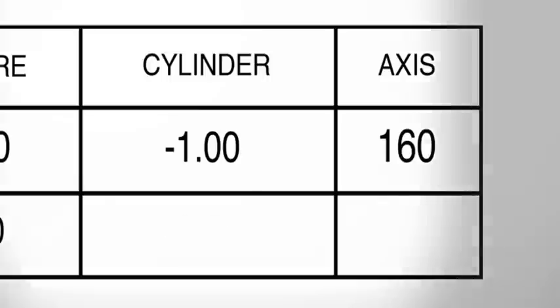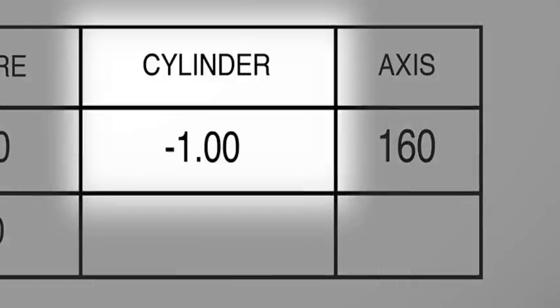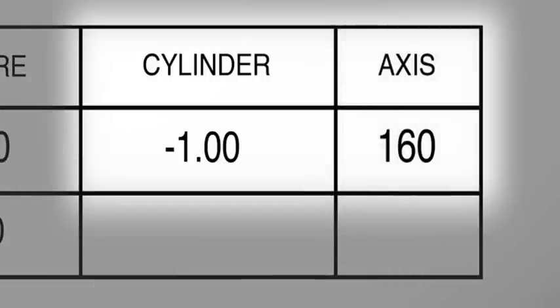The cylinder number relates to the amount of correction needed, and the axis number describes whereabouts on your eye the astigmatism is. It'll be a number between 1 and 180.